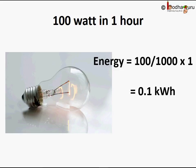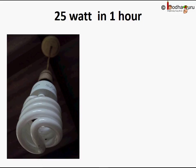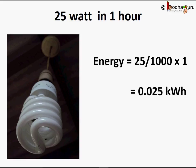So how long will this bulb take to consume one unit of electricity? We know one unit equals one kilowatt-hour. One divided by 0.1 equals 10, so it would take this 100-watt bulb 10 hours to consume one full unit of electricity, because 10 times 0.1 kilowatt-hour equals one kilowatt-hour. What about a CFL bulb of 25 watts? It will consume 25 by 1000 into one hour, which equals 0.025 kilowatt-hours in one hour — way lesser than the regular bulb. This means CFLs are very cost-effective and environment-friendly too, as we save on producing that much electricity.